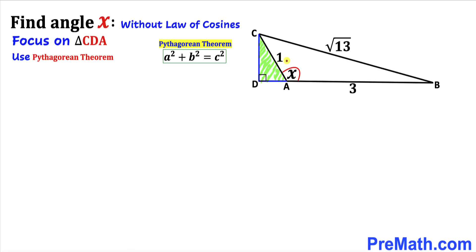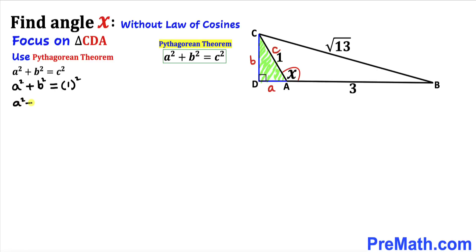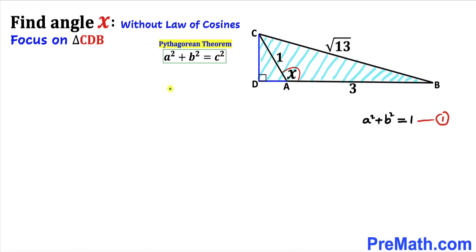Let me go ahead and call this longest leg as our side C, this side A, and this side B. So let's fill in the blanks in this Pythagorean formula. A in our case is a, so it becomes a² plus b², and C in our case is 1 whole square. That gives us a² + b² = 1. Let me call this our equation number 1.